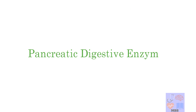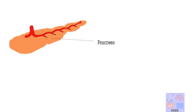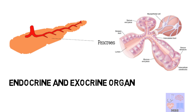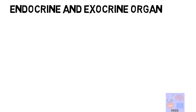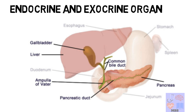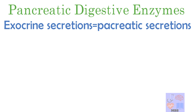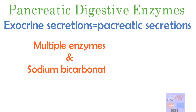Today we are going to talk about pancreatic digestive enzymes. First, we will discuss the general physiology of digestion by pancreatic enzymes. The pancreas is a compound gland with a similar structure to the salivary gland. It is also known as an endocrine and exocrine organ. Exocrine secretions are secreted into a duct called the pancreatic duct, which joins the hepatic duct and empties into the duodenum.